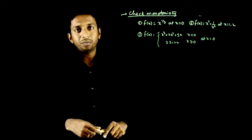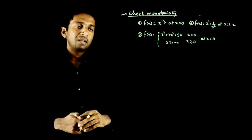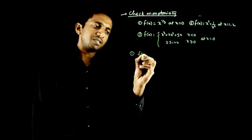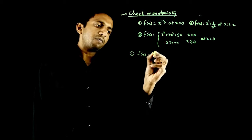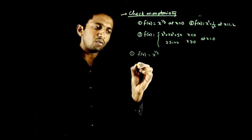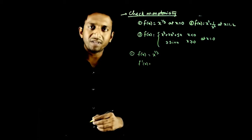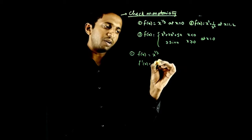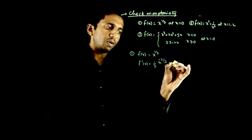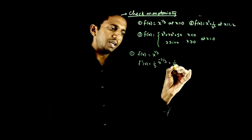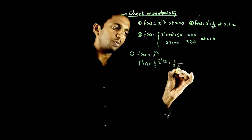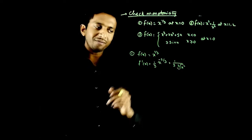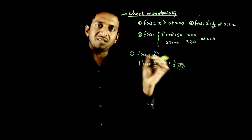Let us analyze the first question: f(x) = x^(1/3). What is f'(x)? f'(x) = (1/3) · x^(-2/3), which equals 1 divided by 3 times the cube root of x². So the meaning of x^(2/3) in the denominator is cube root of x².